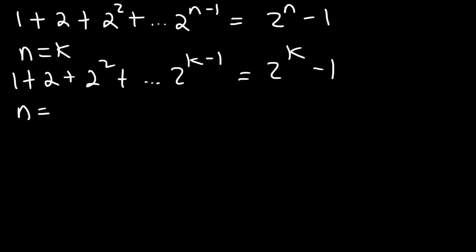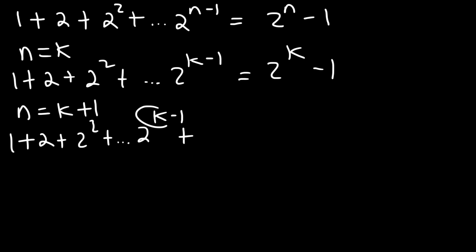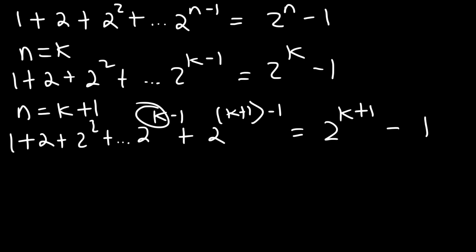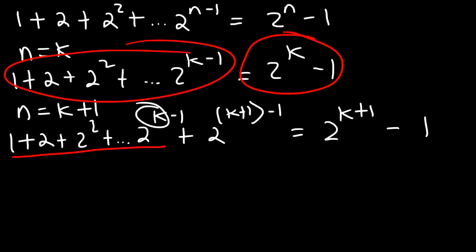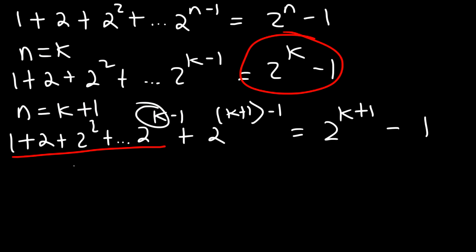Now, let's prove that it's true when n is k plus 1. The next term — replace k with k plus 1 — so it's going to be 2 to the k plus 1 minus 1. And then replace k with k plus 1 on the right side as well. So we need to prove that the left side and the right side are the same. The first thing we need to do is replace the sum up to 2 to the k minus 1 with 2 raised to the k minus 1, because they're equal to each other. So we're going to have 2 raised to the k minus 1 plus 2 to the k. The 1's cancel — 1 minus 1 is 0 — so that becomes 2 raised to the k power.